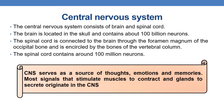Coming to the Central Nervous System: it consists of the brain and spinal cord. The brain is located in the skull and contains about 100 billion neurons. The spinal cord is connected to the brain through the foramen magnum of the occipital bone and is encircled by the bones of the vertebral column.